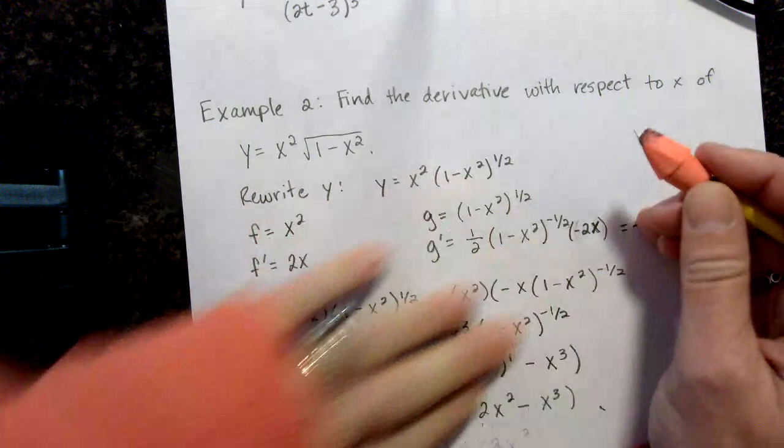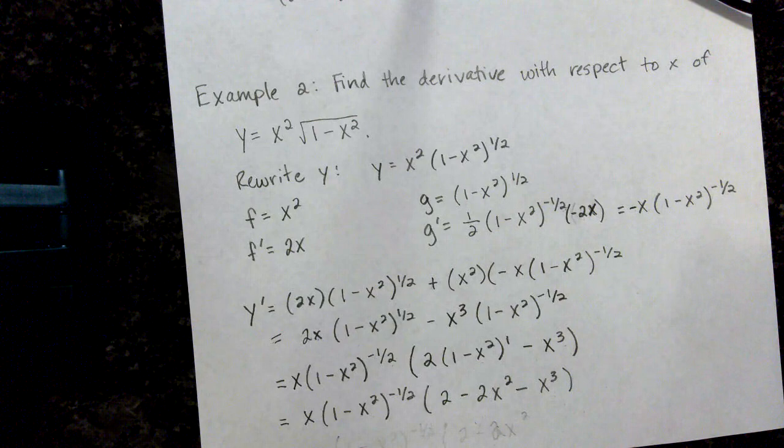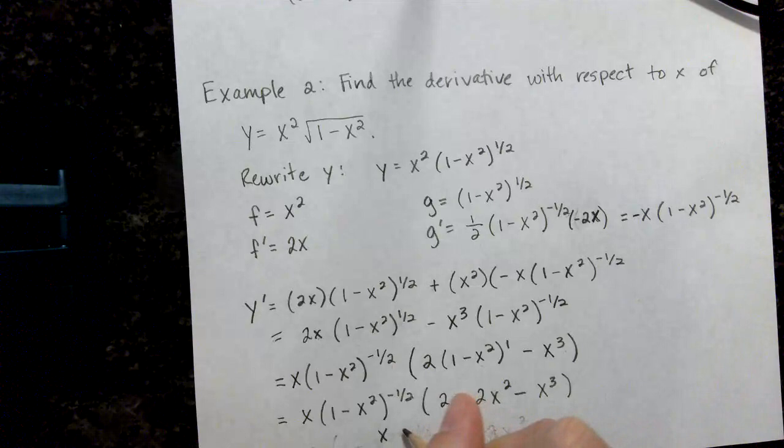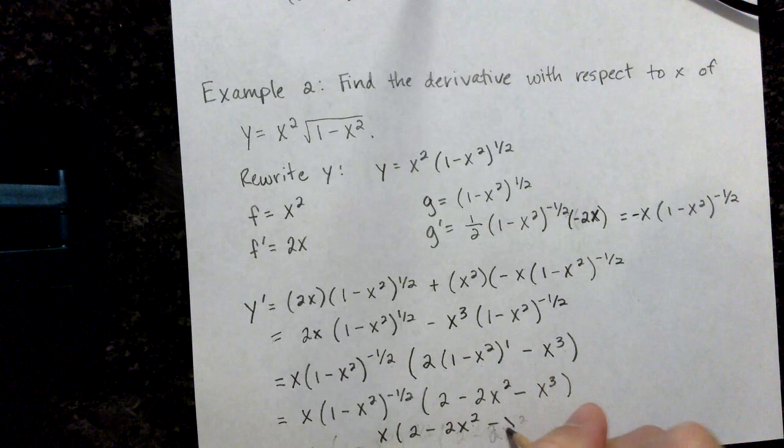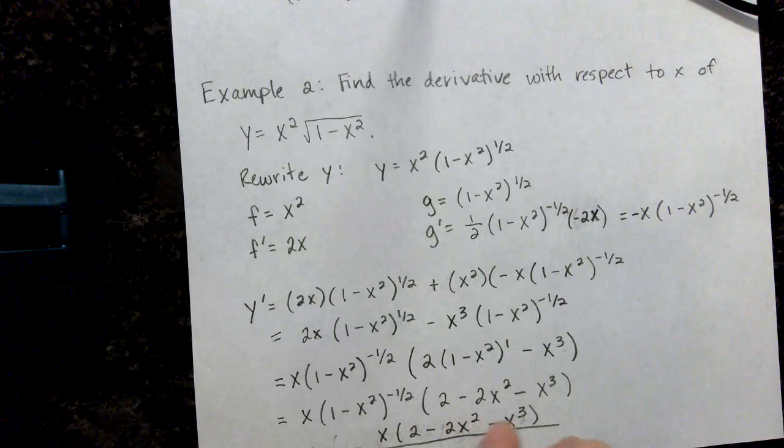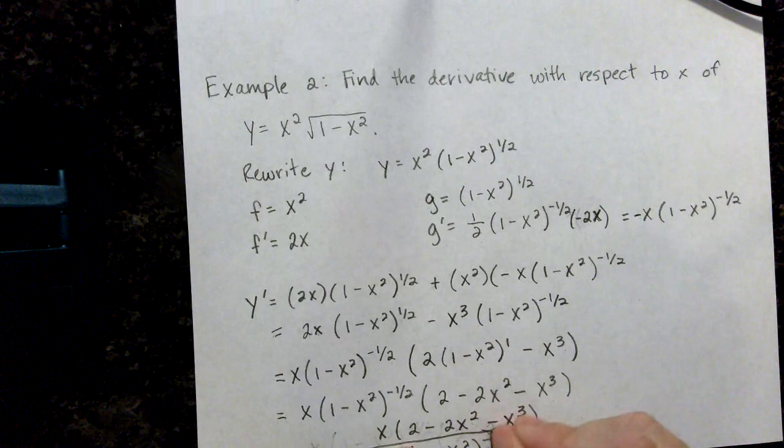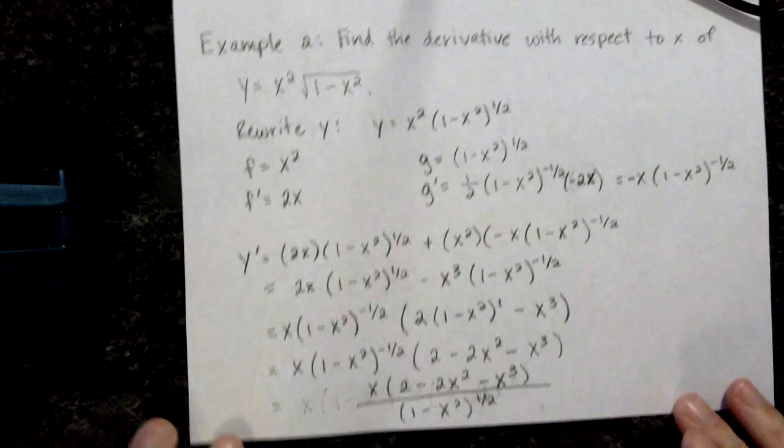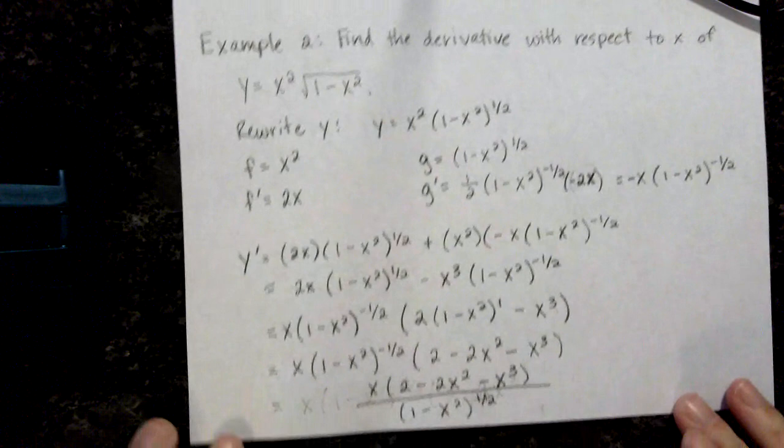Now we just want to rewrite with a positive exponent. So this becomes, I still have x in the numerator. I have 2 minus 2x squared minus x cubed. And this is going to be over 1 minus x squared to the 1 half. Sorry for my mistake there.